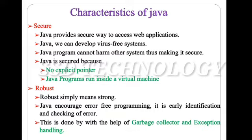Java is secured because there is no explicit pointer and Java programs run inside a virtual machine. Robust simply means strong. Java encourages error-free programming. It involves early identification and checking of errors, done with the help of a garbage collector and exception handling.